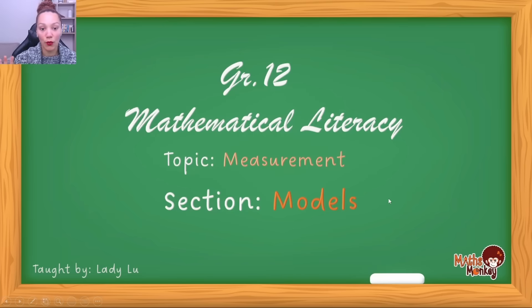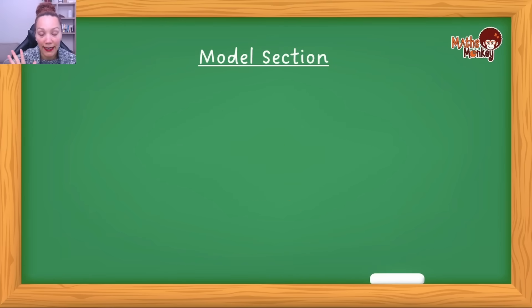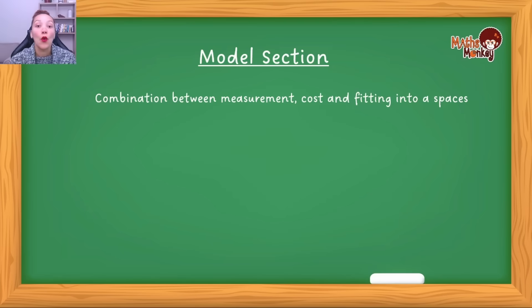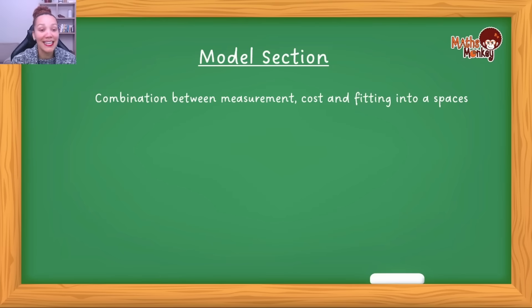All right, so we are doing models. I like to start right at the beginning and understand what this model section is actually about. Essentially, the model section really just looks at a combination between what you've learned in measurement, what you've learned in finance that has to do with cost, and essentially putting smaller things into bigger spaces.